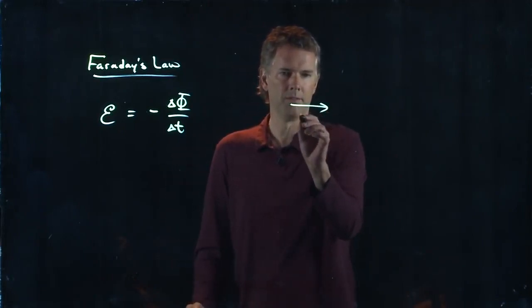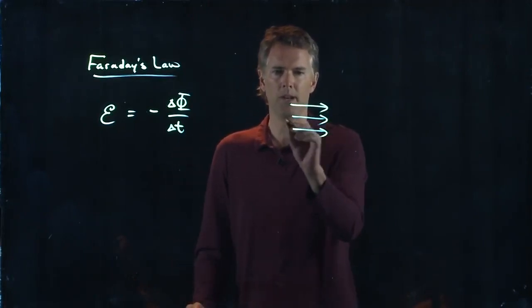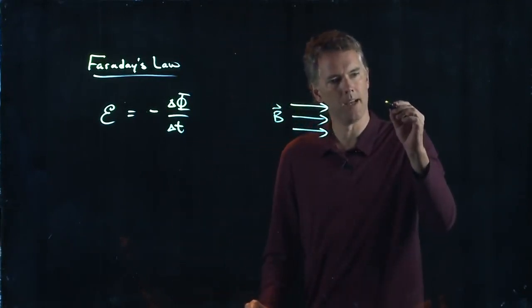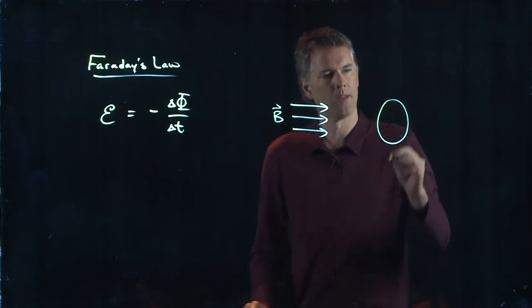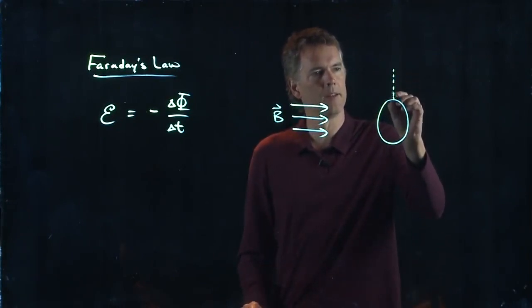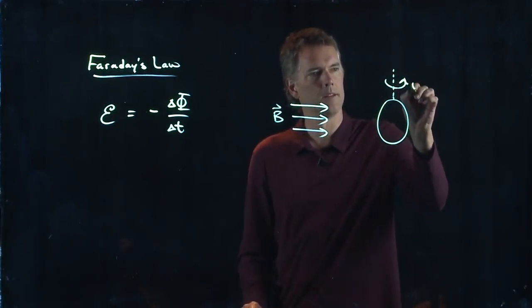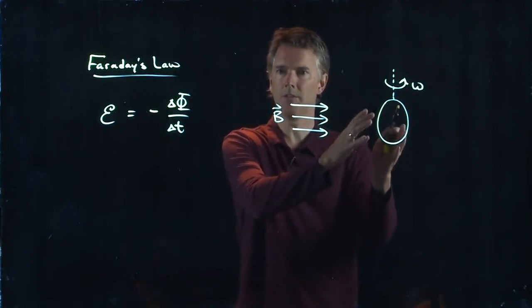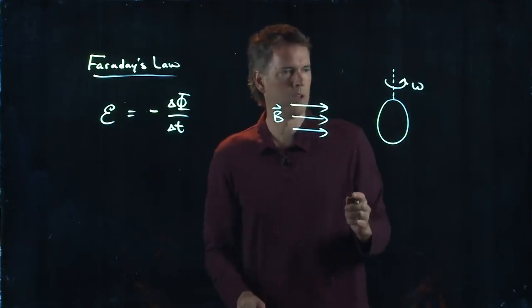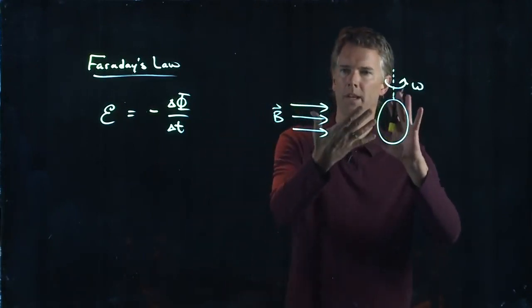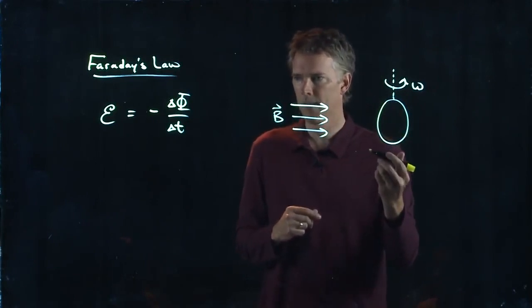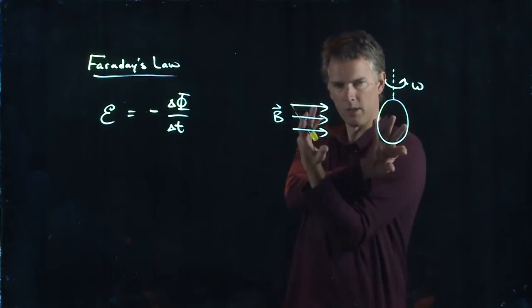This is kind of cool because if I just take a B field pointed in one direction and take a current loop and spin it at some frequency Omega, what happens? When it's facing one way, there is current generated one way.